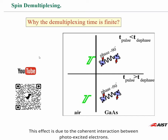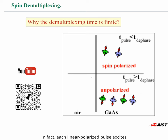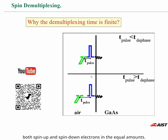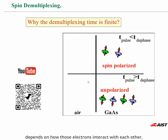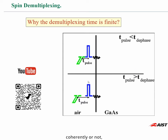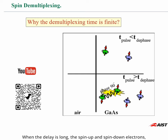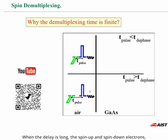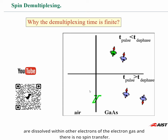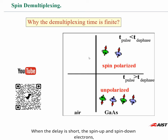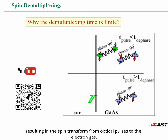This effect is due to the coherent interaction between photoexcited electrons. Each linearly polarized pulse excites both spin-up and spin-down electrons in equal amounts. The remaining spin polarization excited by two consequent optical pulses depends on how those electrons interact with each other — coherently or not — and as a result depends on the delay between pulses. When the delay is long, the spin-up and spin-down electrons excited by each pulse are dissolved within other electrons of the electron gas and there is no spin transfer. When the delay is short, the spin-up and spin-down electrons interact coherently according to their phase, resulting in spin transfer from optical pulses to the electron gas.